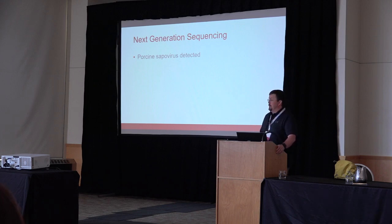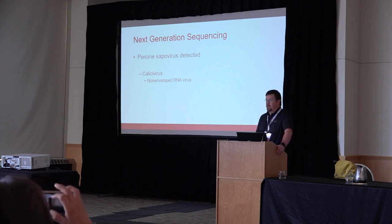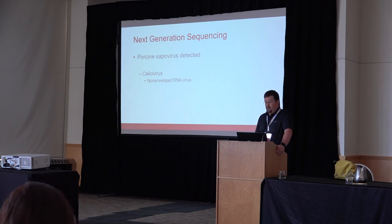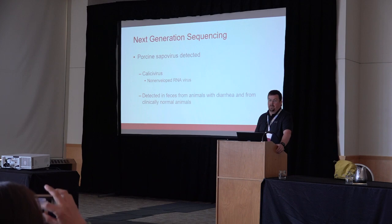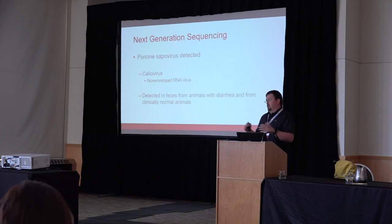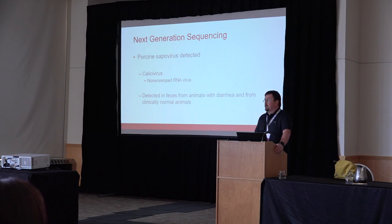This turned out to be porcine sapovirus enteritis. Sapovirus is a calicivirus — non-enveloped RNA virus, which makes it very hardy in the environment and hard to get rid of. Being RNA, it is fairly mutable, so you will get variation appearing quickly. One issue with sapovirus, similar to rotavirus, is that you can detect it in the feces of both diarrheic and clinically normal animals. So it's important not to go strictly by PCR results — you need to integrate everything holistically. In this case, there was pretty clear evidence that sapovirus was causing issues at this sow farm.